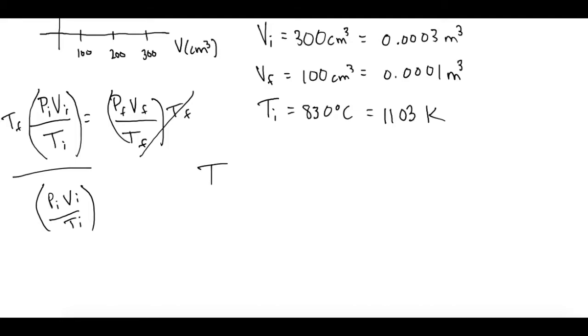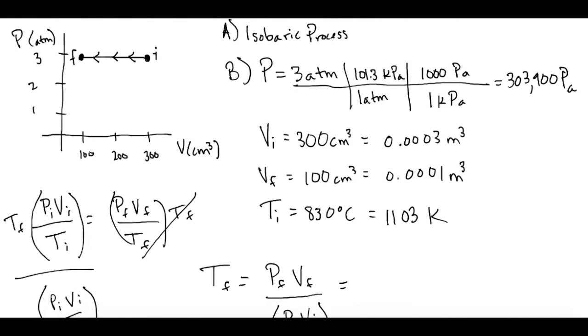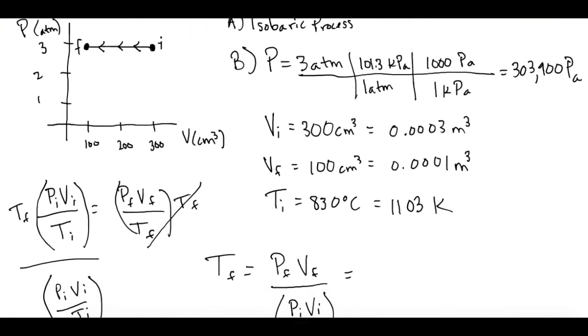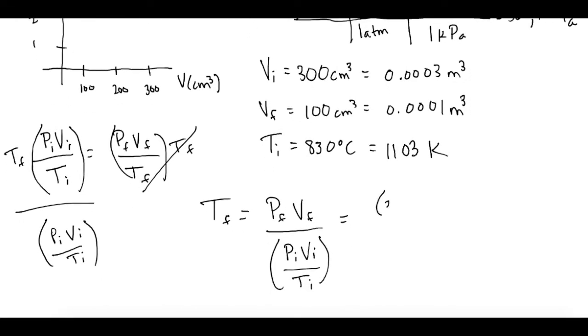So that gives us a T final of the final pressure and volume divided by initial pressure times initial volume divided by initial temperature. So when we plug in our values, we have the final pressure, which is the same because it's isobaric, so 303,900 pascals times the final volume, which is 0.0001 meters cubed.